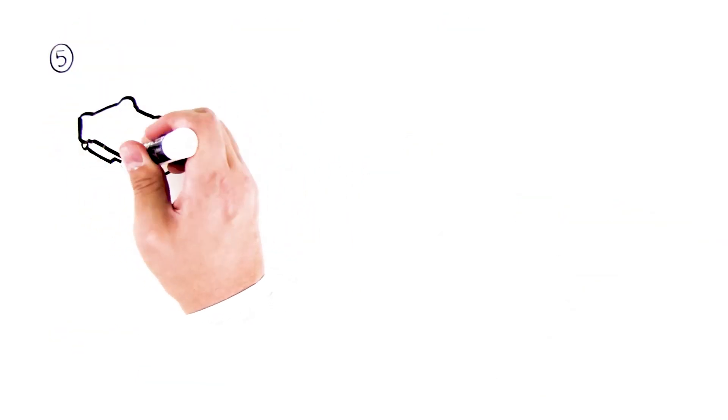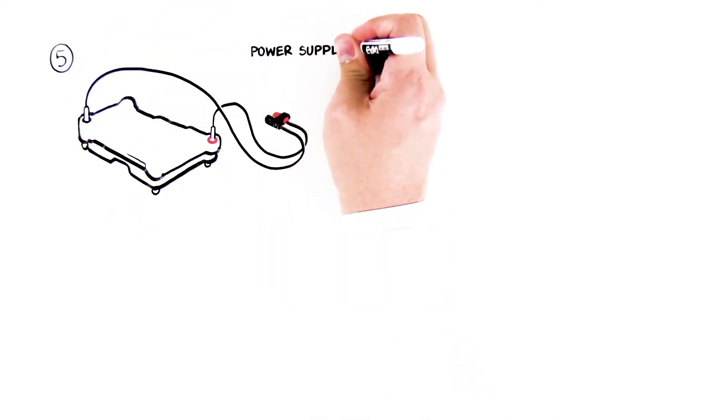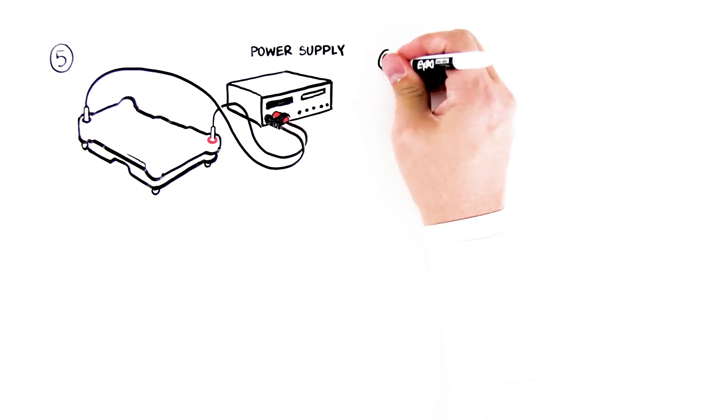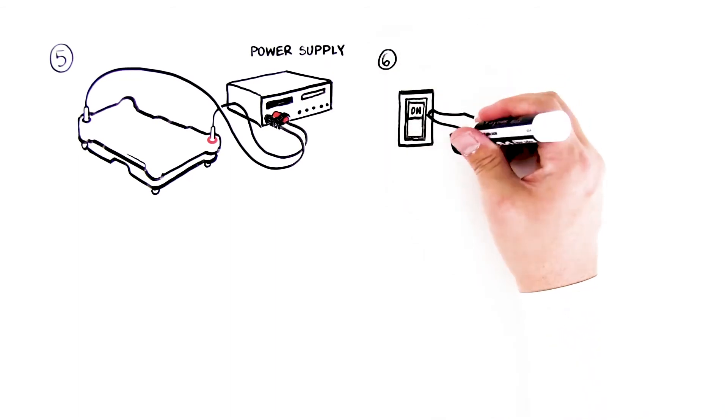Place the lid on the electrophoresis chamber and connect the electrical leads to the power supply, red to red and black to black. Turn on the power and run the gel. Ask your instructor for the run conditions.